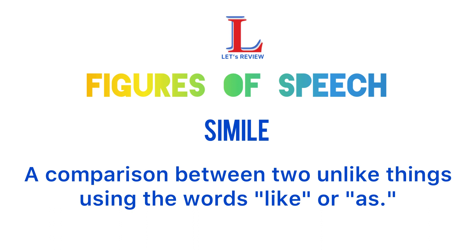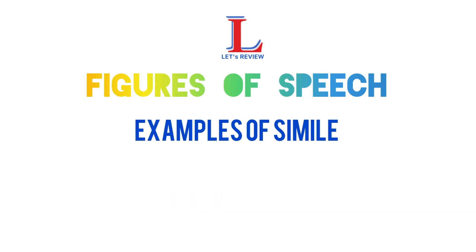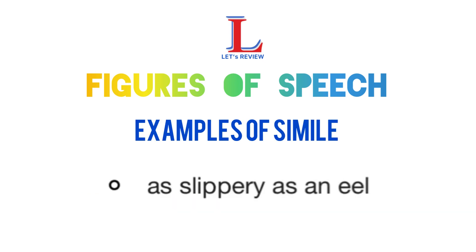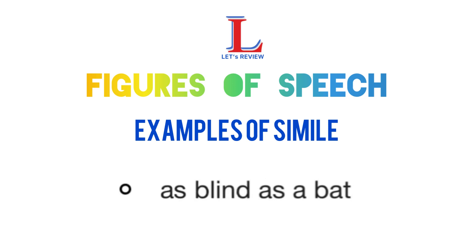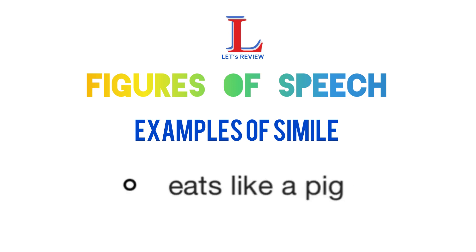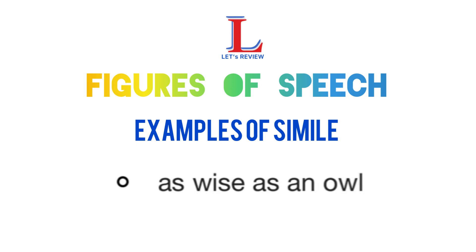Examples of personification include: the flowers nodded, the snowflakes danced, the thunder grumbled, the fog crept in, the wind howled. A simile is a comparison between two unlike things using the words like or as. For example: as slippery as an eel, like peas in a pod, as blind as a bat, eats like a pig, as wise as an owl.